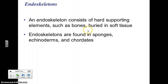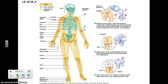An endoskeleton, like we have, is convenient in that it allows for continuous growth — you don't have to molt. It is also the place where muscles are attached. These are voluntary, skeletal muscles. You don't need to memorize all the muscle names, but you may see those terms.